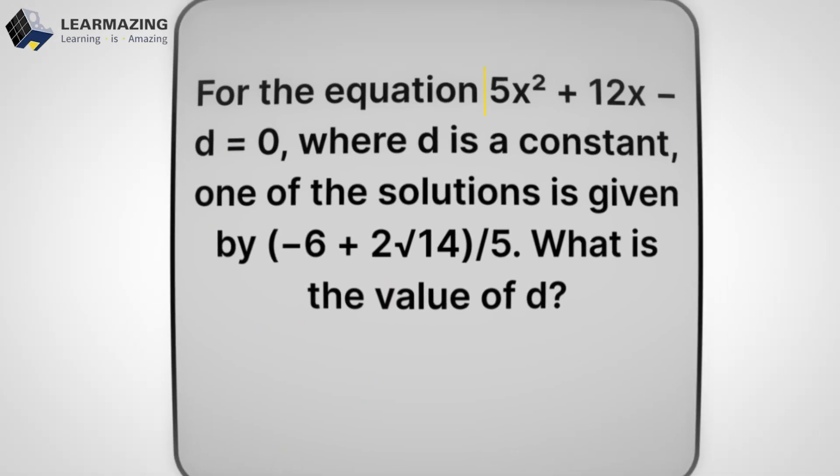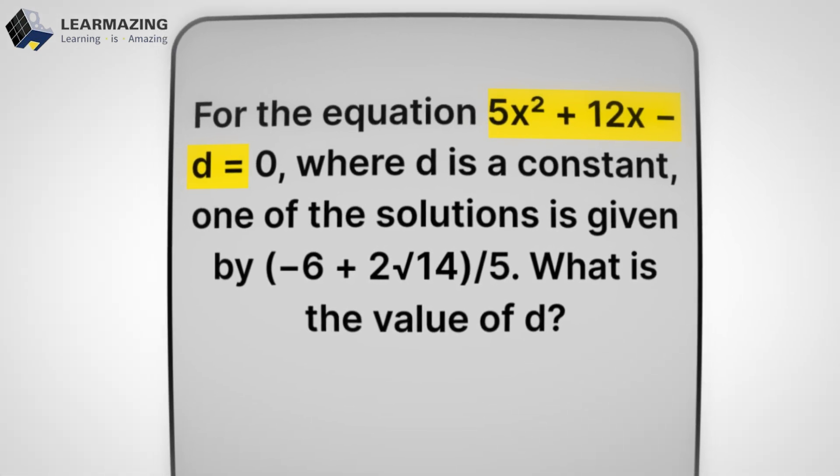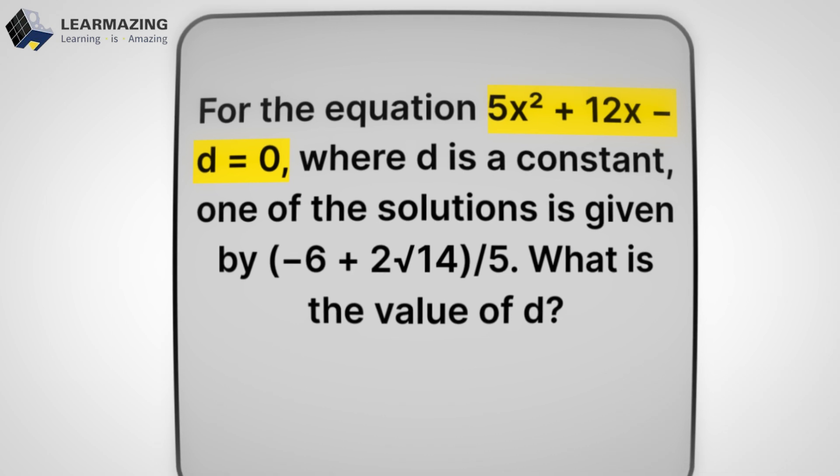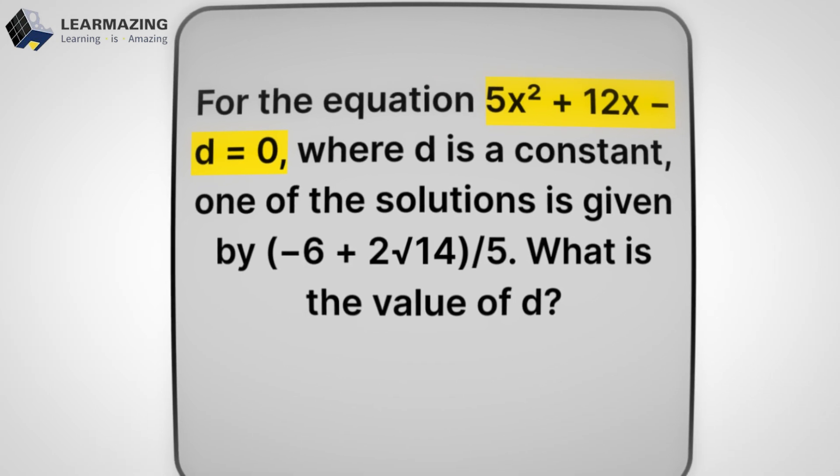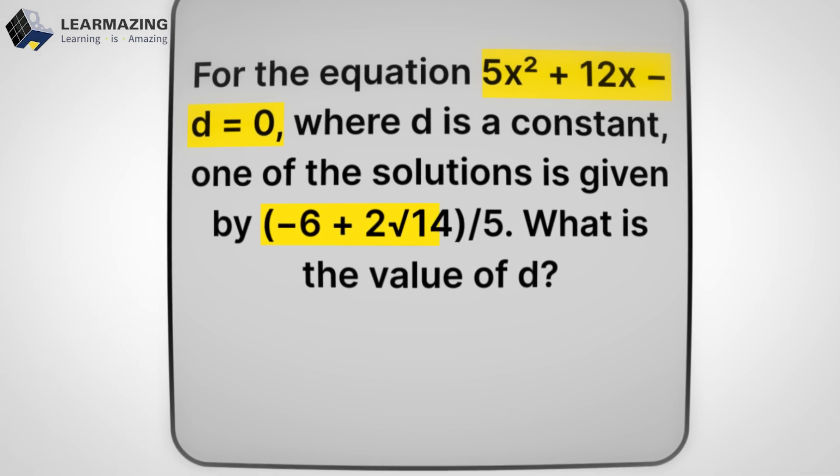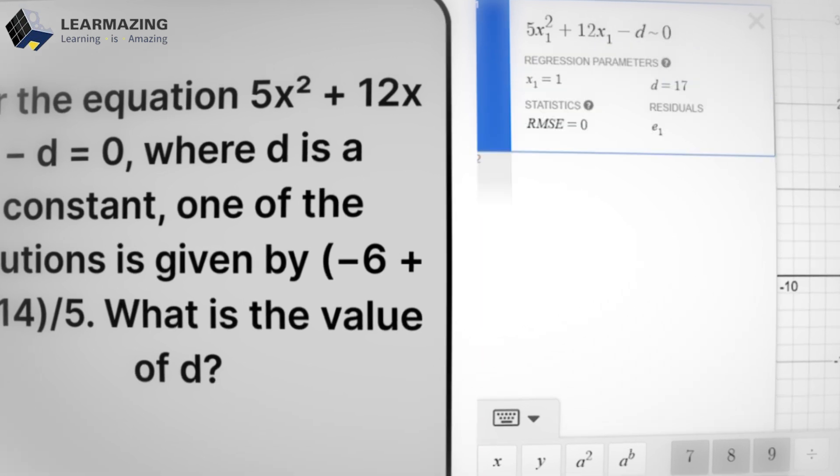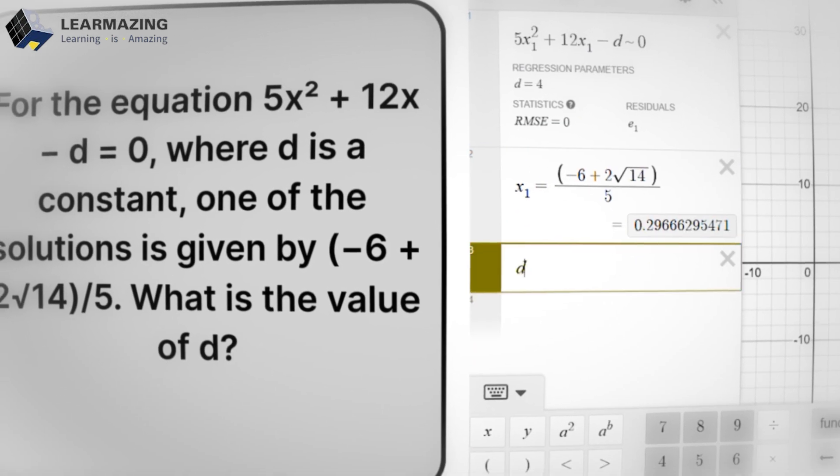We're given the equation 5x² + 12x - d = 0, and told one solution is (-6 + 2√14)/5, and Desmos simplifies it instantly. d equals 4.